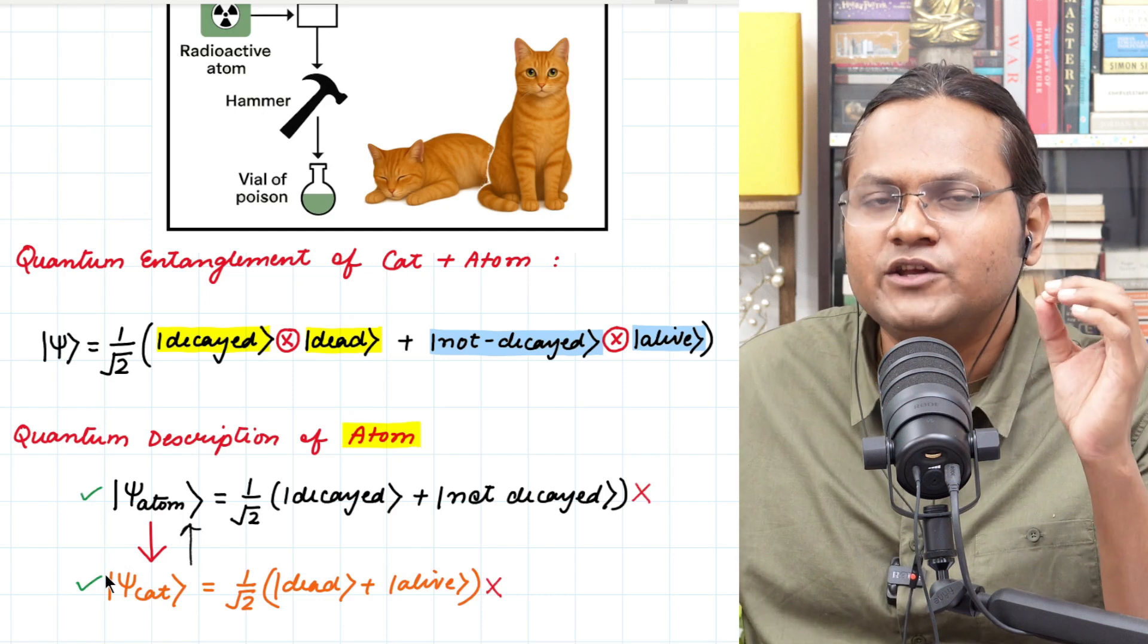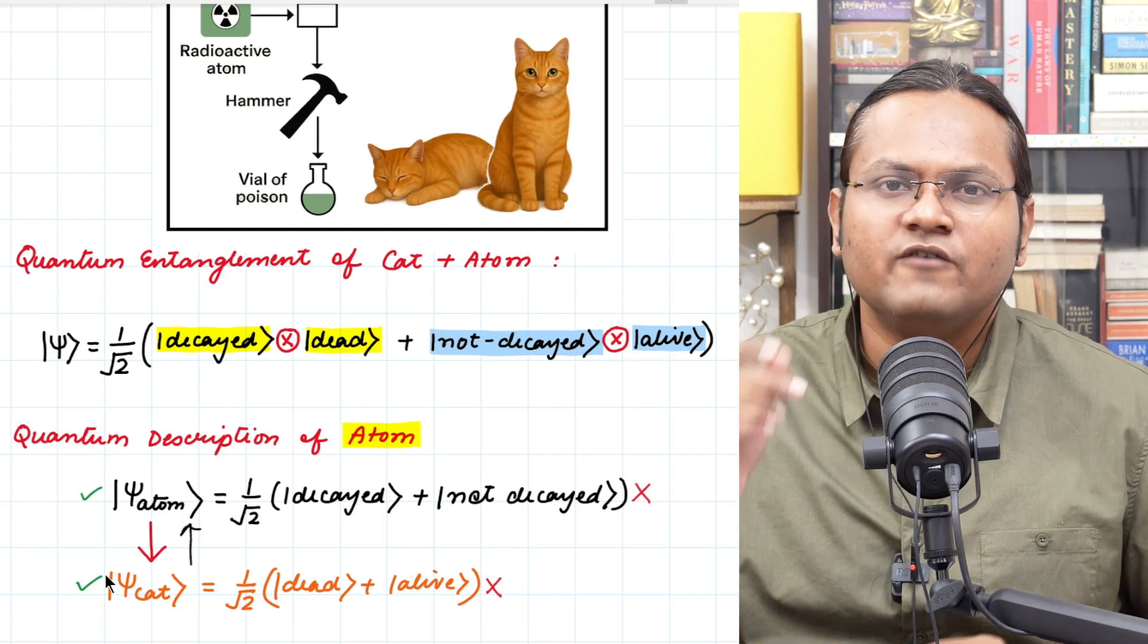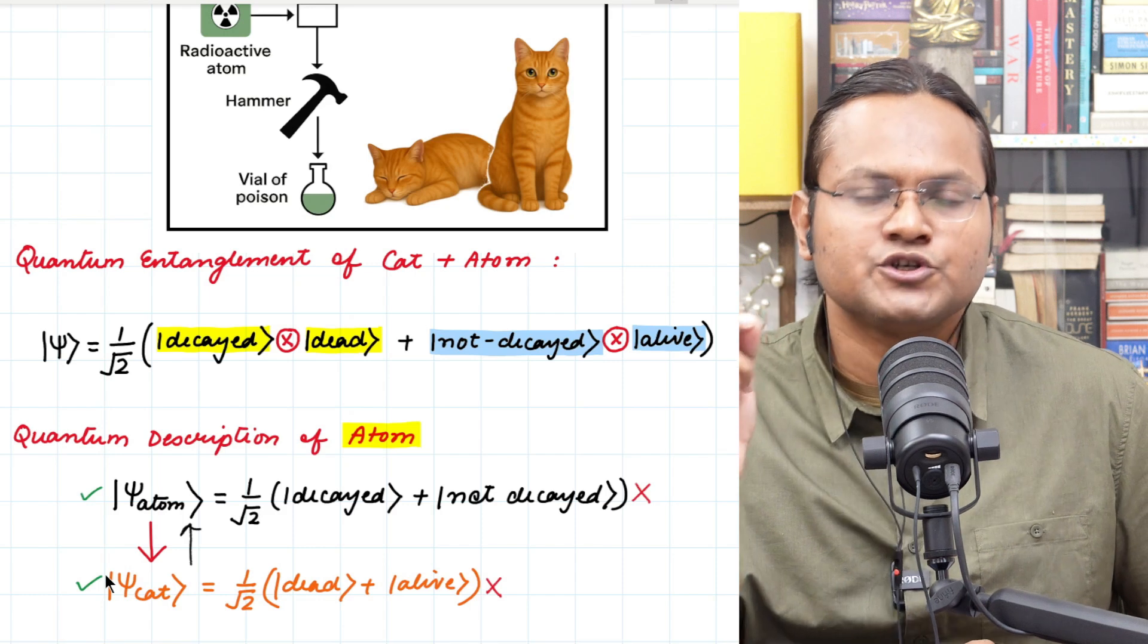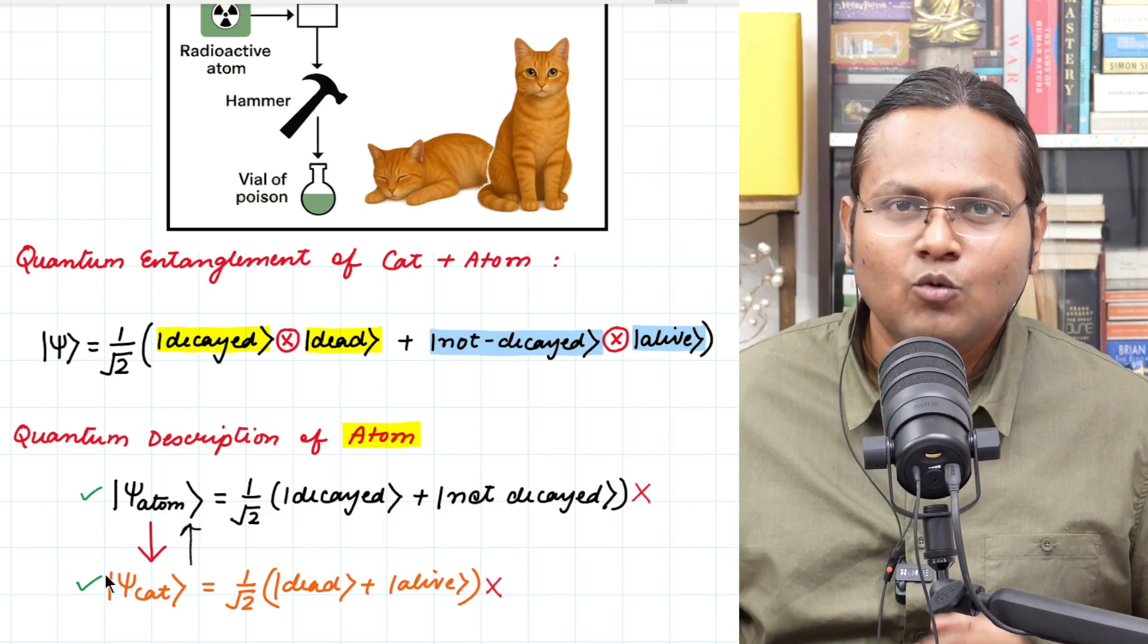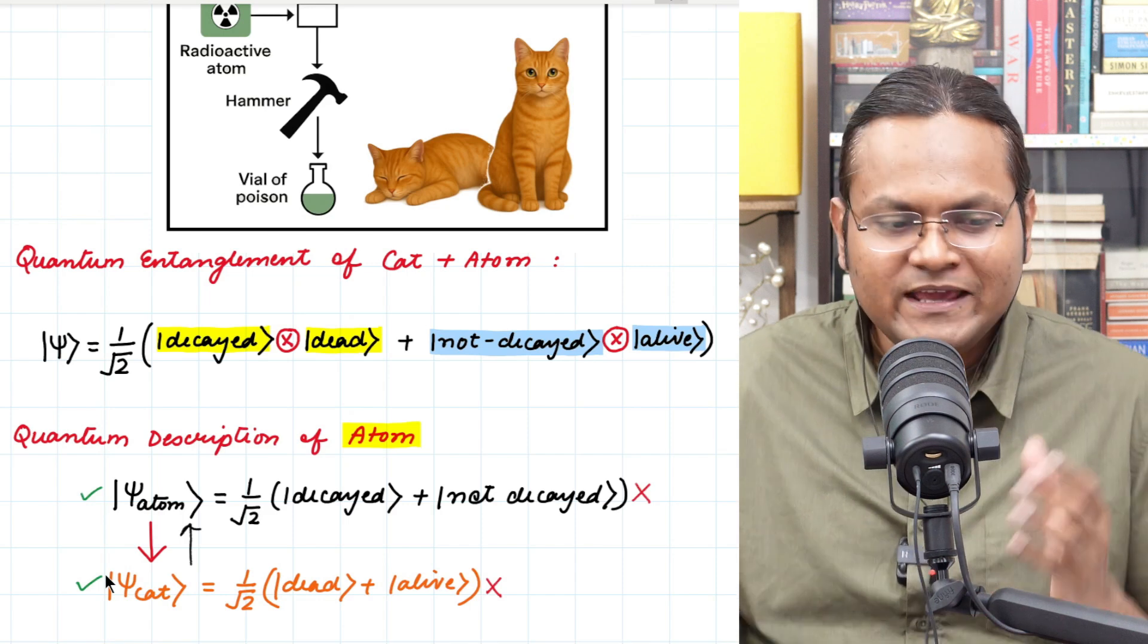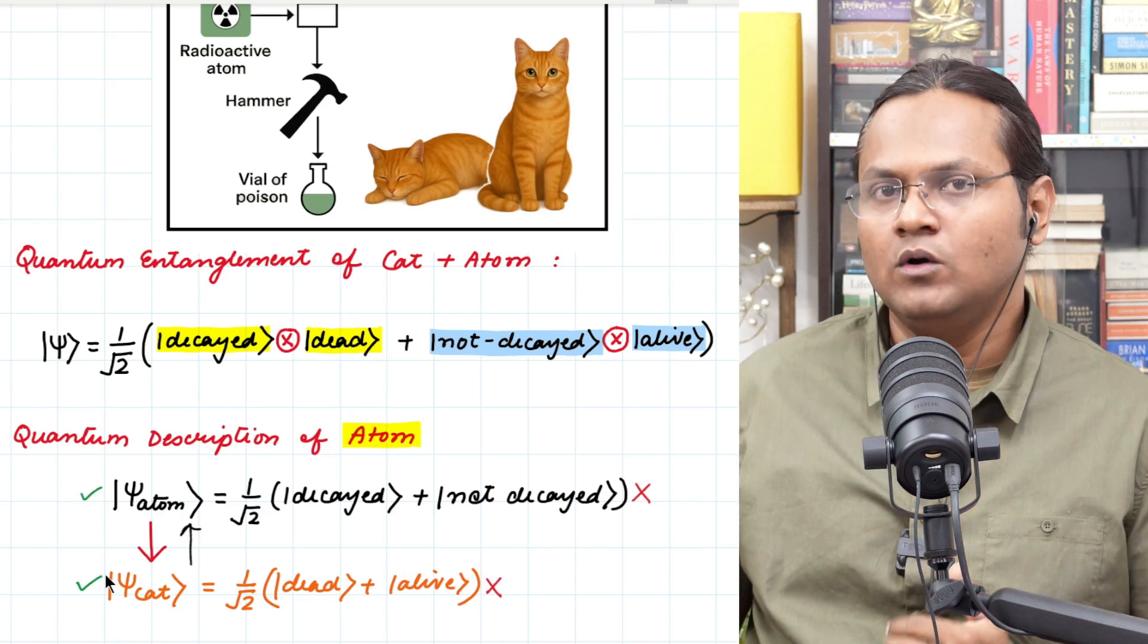And yet that is the description which we are forcing onto the quantum world. For over 100 years now, the quantum mechanical theory has proved itself to be a very successful description of the subatomic world. So what's happening? Why this absurdity when we implement the very same quantum rules into the classical world?